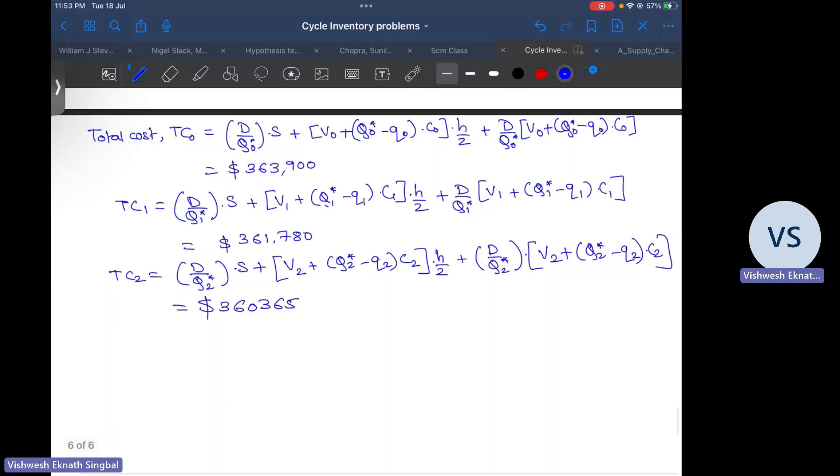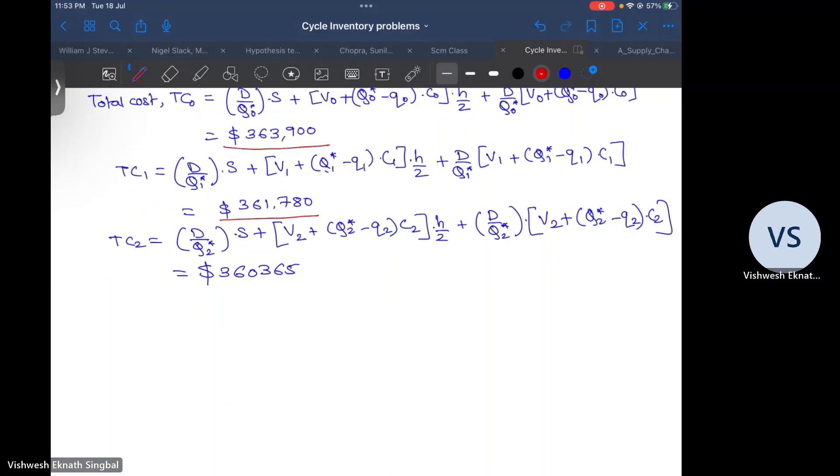Now when you compare all these three, you will note that TC2 is the lowest cost. Therefore, we place an order with lot sizes equal to 16,961 per lot so that we meet our total annual demand of 120,000 units.